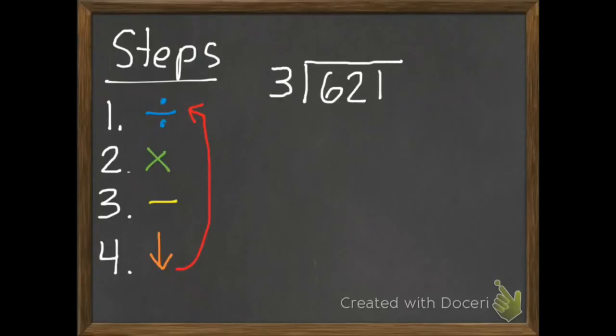So our first problem is 621 divided by 3. I'm going to write my multiples of 3 at the bottom just to help me out. So we've got 3, 6, 9, 12, 15, 18, 21, 24.